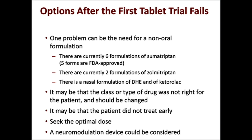Conventionally, we give oral tablets to patients, but if oral treatment fails, we need to re-evaluate and optimize acute treatment. One problem can be the need for a non-oral formulation — there are four formulations of sumatriptan and two of zolmitriptan, plus nasal formulations of DHE and ketorolac. It may also be that the class of drug was not right, that the patient did not treat early in the attack, or that the dose was not optimal. One could also consider prescribing a neuromodulation device for acute treatment.